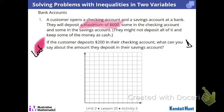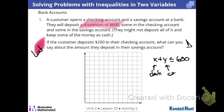If you forget what A, B, C, D are, where could you look? Your packet — it's listed right at the top of your problem. Let's go. For this checking account, who's got an inequality that works? X plus Y is less than or equal to $600. And then we'd have to define X as checking and Y as savings. And then you probably graphed it.